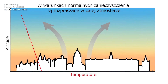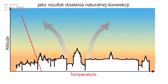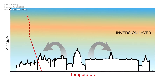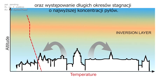During normal conditions, pollution is diffusing over the whole atmosphere as a result of natural convection. Formation of an inversion layer causes a lack of vertical movement of the atmosphere and an occurrence of high and long-lasting pollution concentrations.